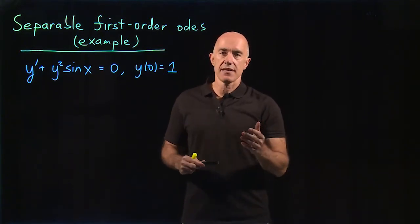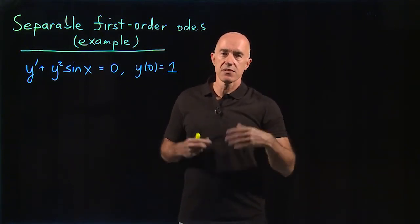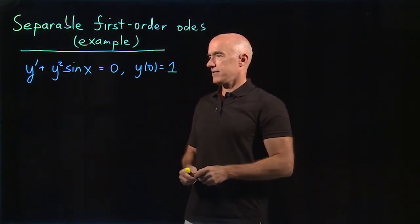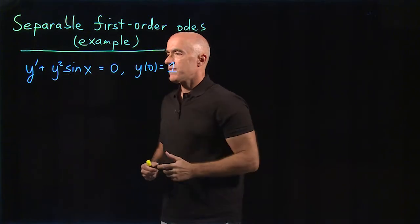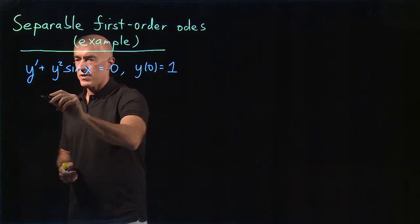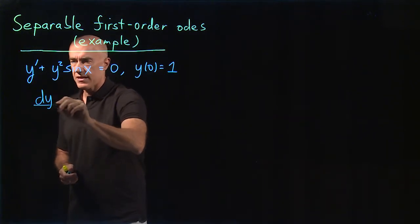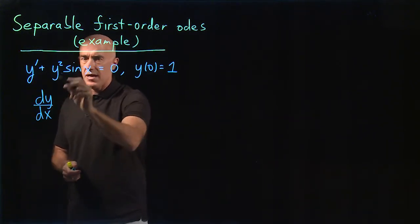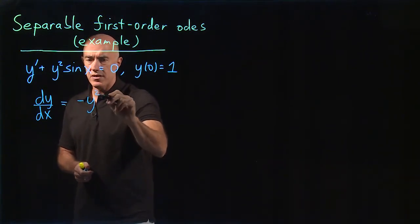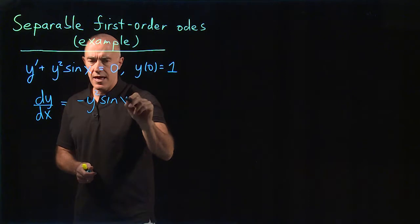Can we write that as some function of y times dy equals some function of x times dx? Many times you have to manipulate a little bit. Let's change to the Leibniz notation. We have dy/dx for y', and then we can write that as -y²sin(x).